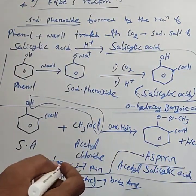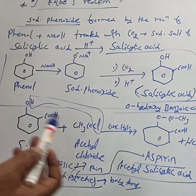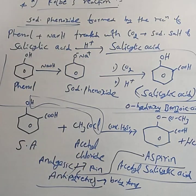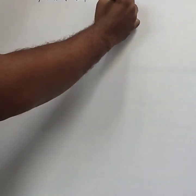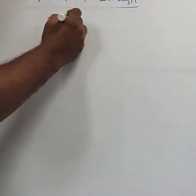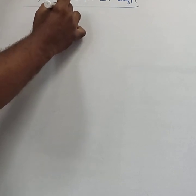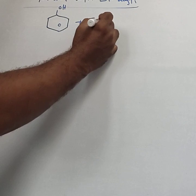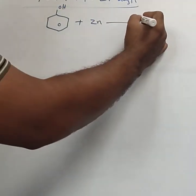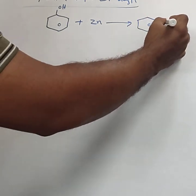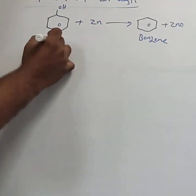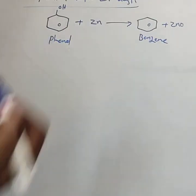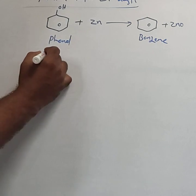Next reaction is with zinc dust. When phenol is treated with zinc dust, the ZnO is removed and the product is benzene. Phenol treated with zinc dust gives benzene.